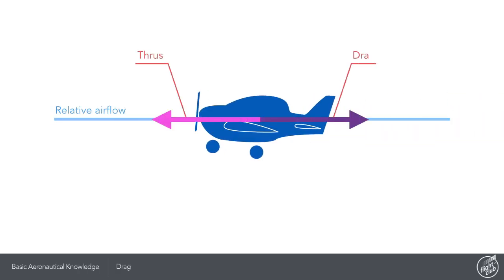Aeroplanes generate thrust to overcome drag. Drag is the air resistance that opposes flight. It acts parallel and in the same direction as the relative airflow and it's a relentless force that deserves a thorough flight club treatment and your full attention.